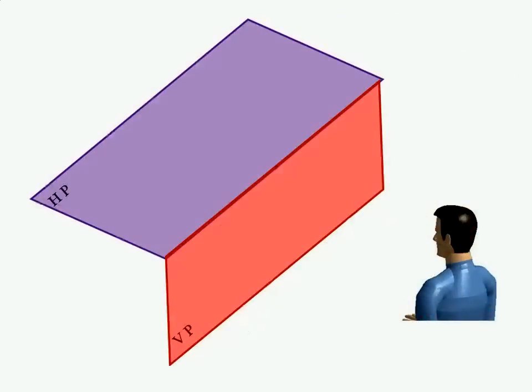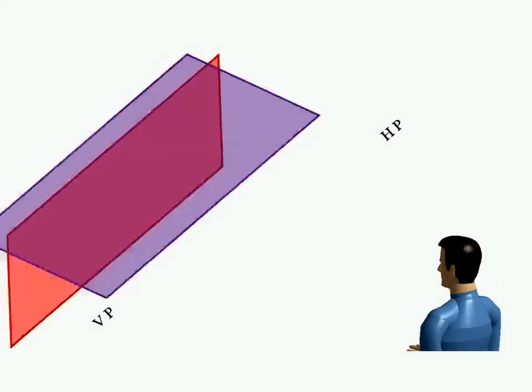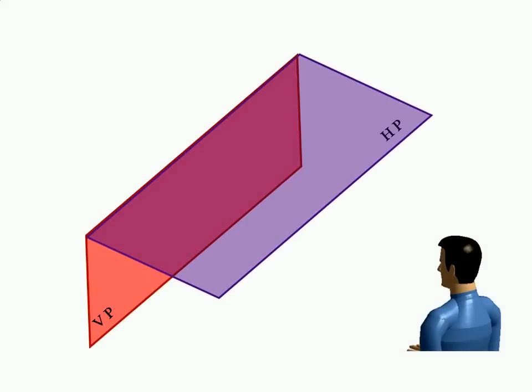In third quadrant, object is below HP and behind VP. And in fourth quadrant, object is below HP and in front of VP.